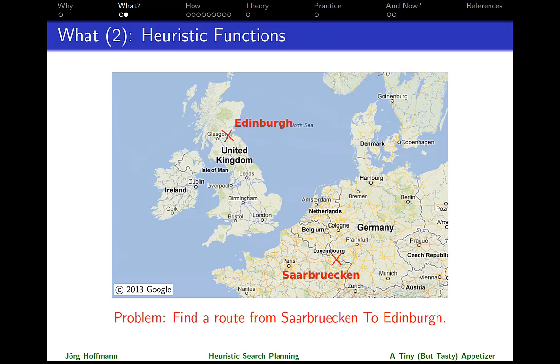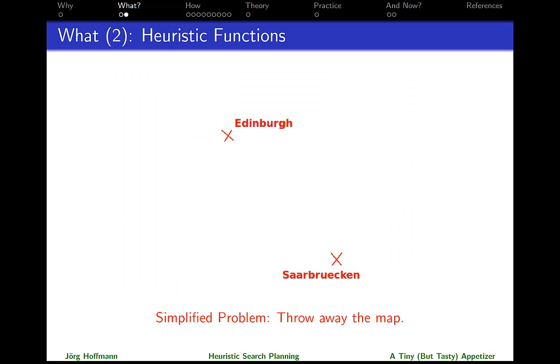Now, here's the standard example illustrating the standard approach. Let's say our problem is to find a route from Saarbrücken to Edinburgh. What we do is we simplify the problem. In this case here, we might choose to simplify it by just throwing away the map. Now what we do is we solve the simpler problem in order to get our estimate, which in this case will be the straight-line distance. So heuristic functions are computed as the solutions to simplified versions of the problem you're interested in.